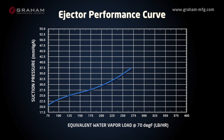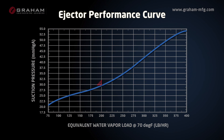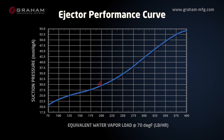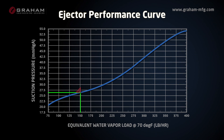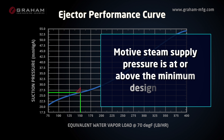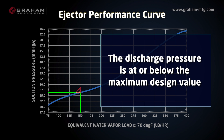The first step is to understand the performance curve. This ejector is designed to operate at a set operating pressure and handle a design load. If the actual load were less than design, the ejector would operate at a lower pressure. An ejector will operate along its performance curve provided that the motive steam supply pressure is at or above the minimum design value and the discharge pressure is at or below the maximum design value.